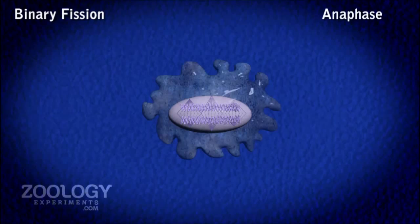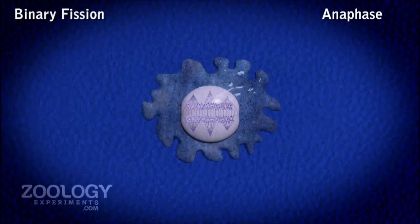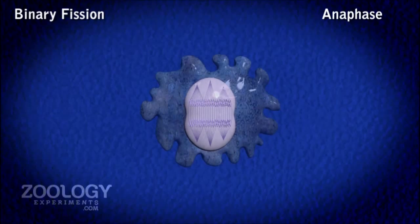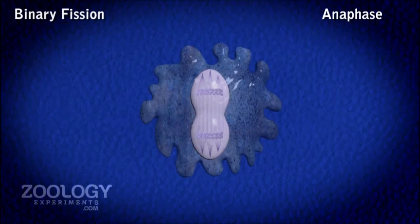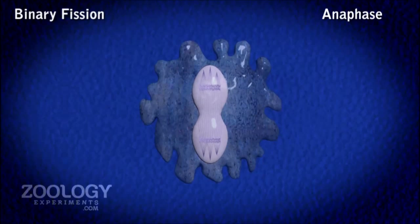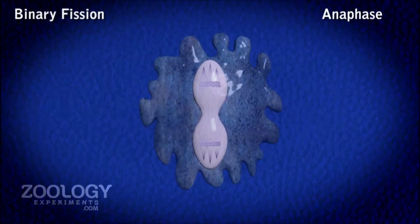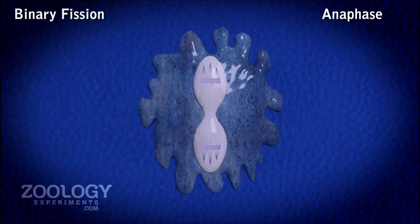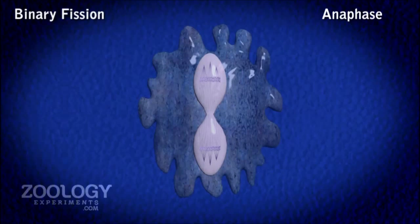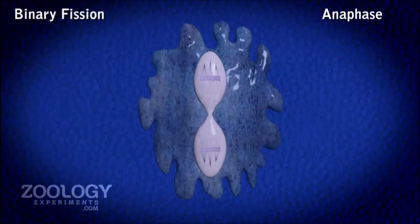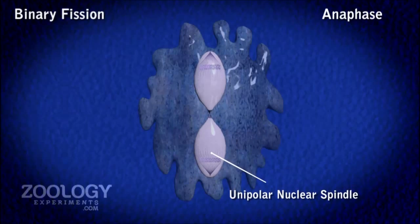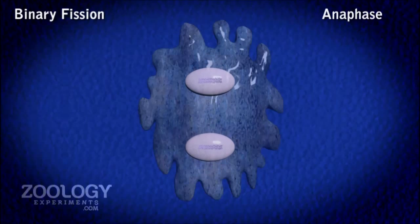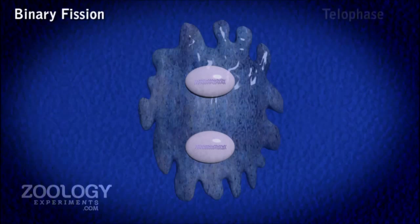Anaphase. During anaphase, daughter chromosomes move towards opposite poles and the constriction of the nuclear membrane begins in the middle. The nuclear spindle, which was multipolar at metaphase, becomes unipolar at the end of anaphase.